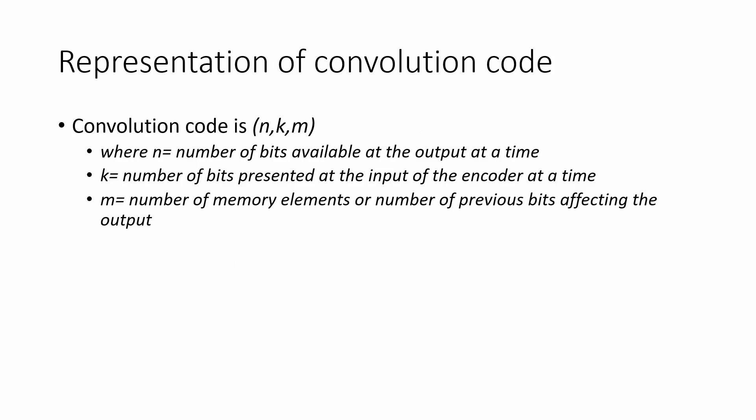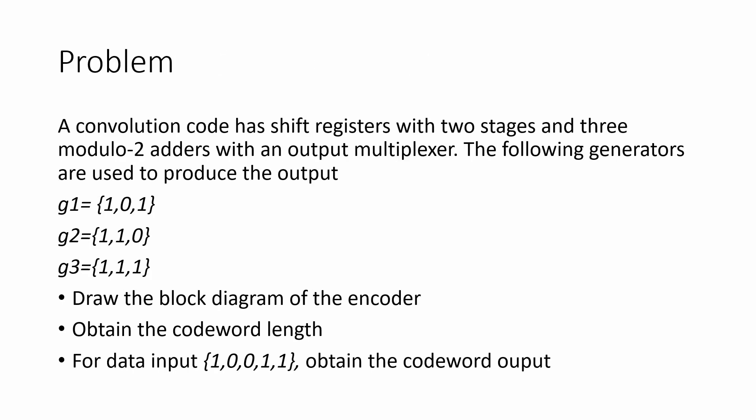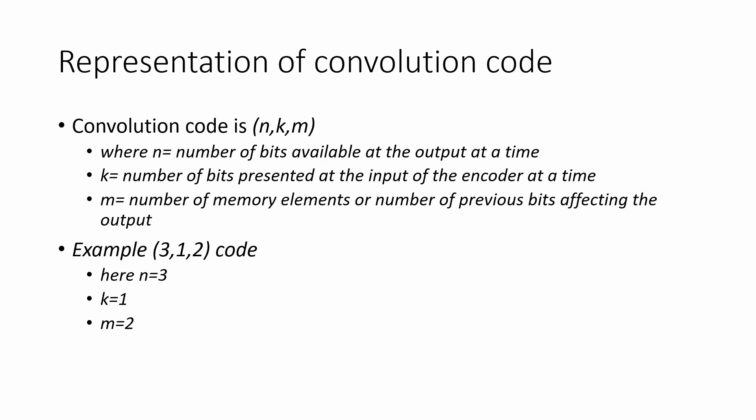Convolution code is represented by (n, k, m), where small n is equal to the number of bits available at the output of the encoder at a time, k is the number of bits presented at the input of the encoder at a time, and m is the number of memory elements or number of previous bits affecting the output. For example, if we have to design a convolution code encoder for (3, 1, 2), we can say that number of outputs is equal to 3, number of inputs is equal to 1, and number of previous bits affecting the output is equal to 2.